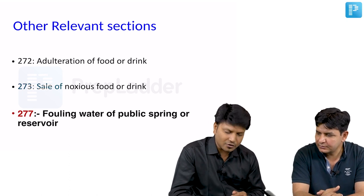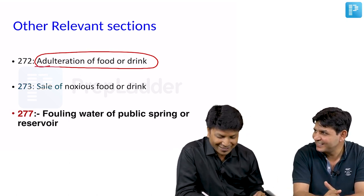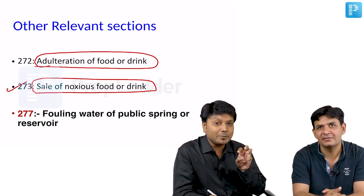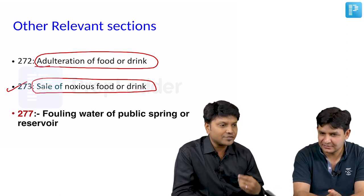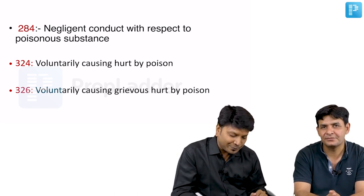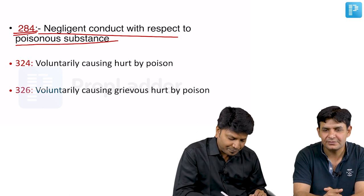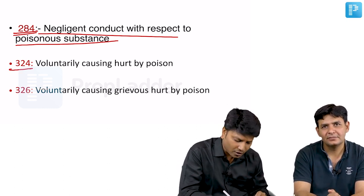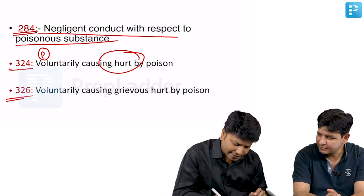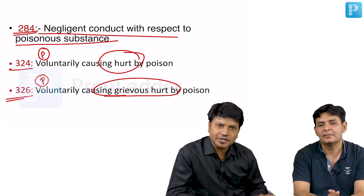Relevant IPC sections: Section 272 — adulteration of food or drink, punishable; Section 273 — selling adulterated or noxious food or drink knowingly, also punishable under 272-273; Section 277 — fouling a water source (common source), punishable; Section 284 — negligent conduct with regard to any poisonous substance, punishable (general for all poisons); Section 324 — causing hurt by dangerous means including poison; Section 326 — voluntarily causing grievous hurt by giving poison.